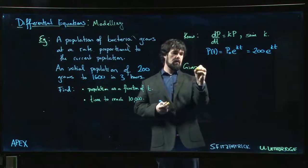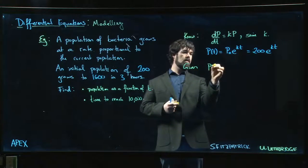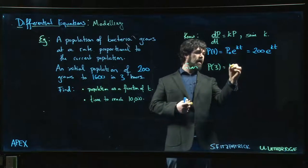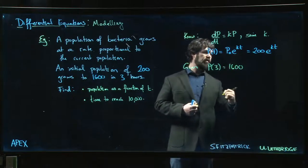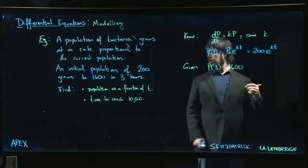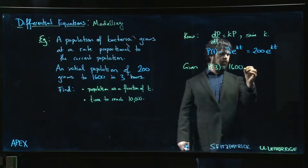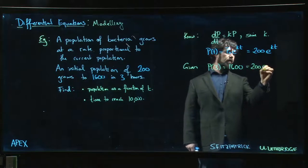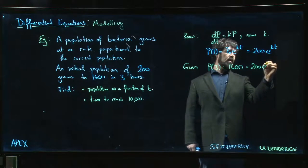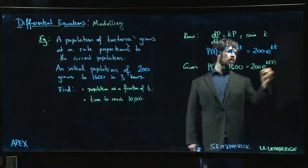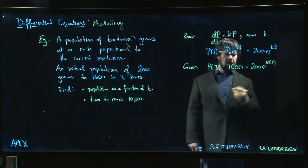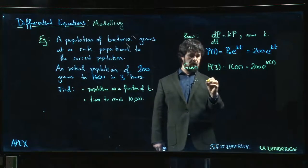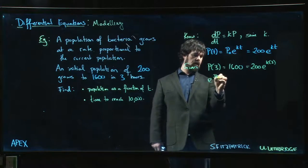We are given the following: p(3), so t measured in hours, on the one hand it's 1600. Oh and I said quadruples—it grows by a factor of eight. So we get e to the k times three. We can put that information in so that means that e to the 3k is 1600 over 200, which is 8.